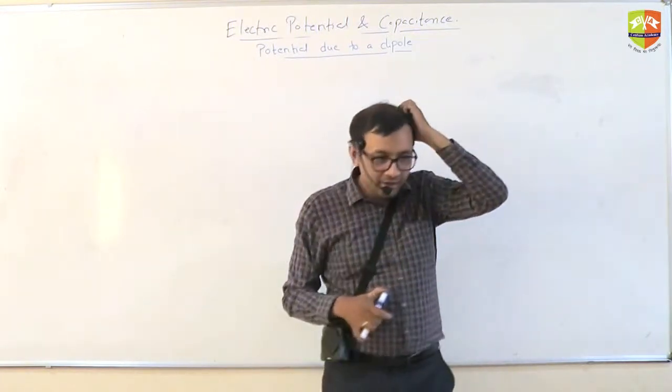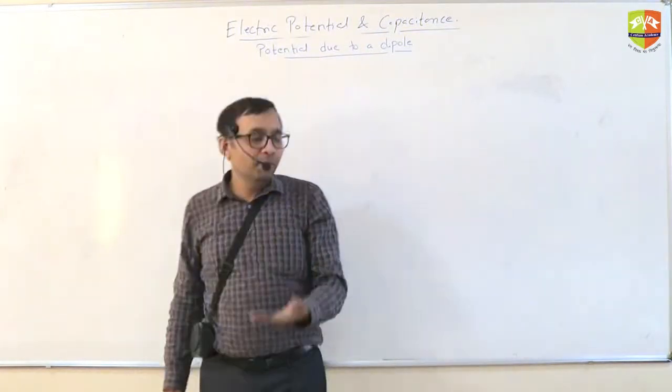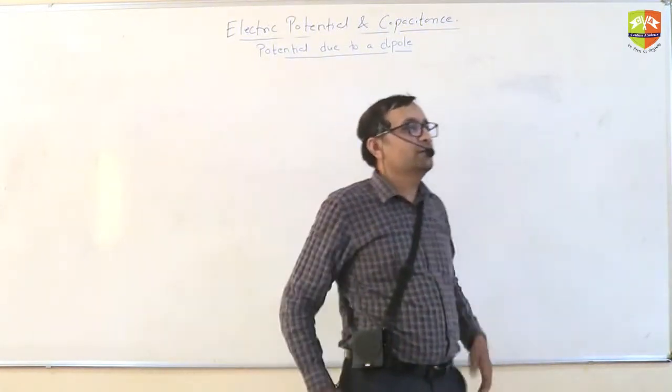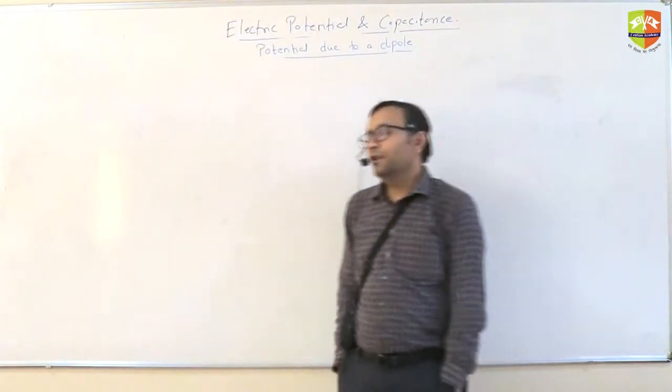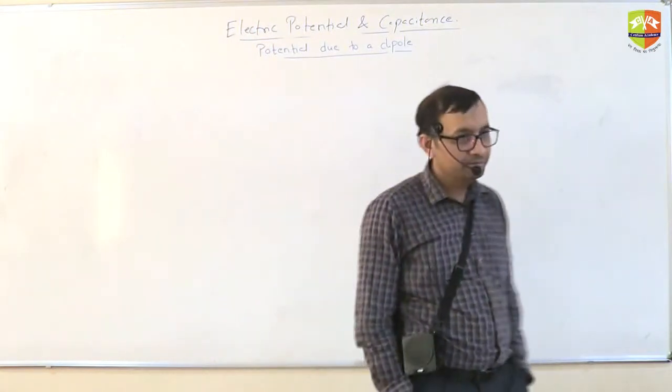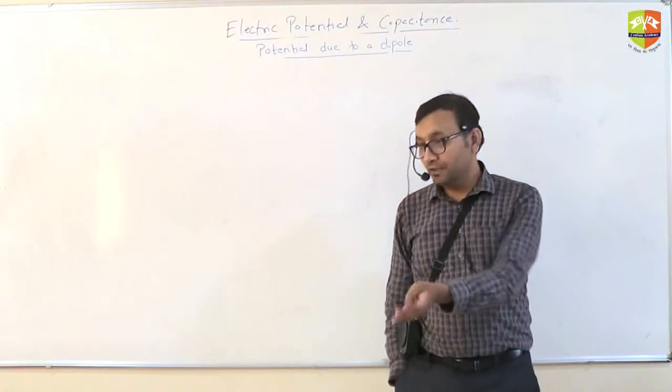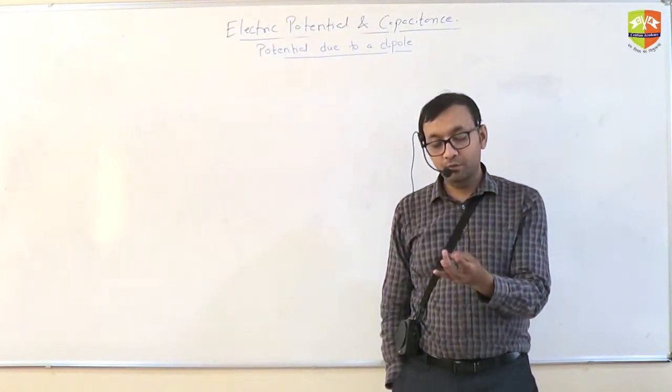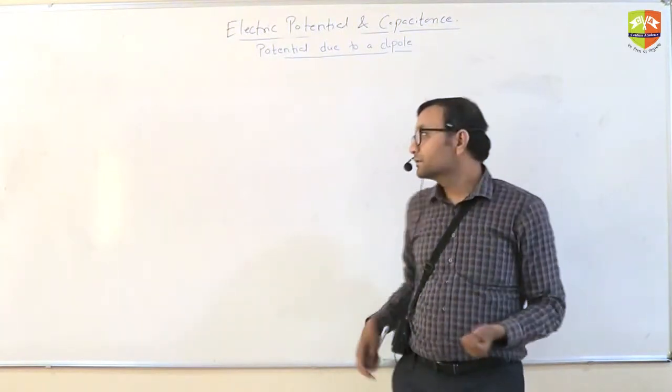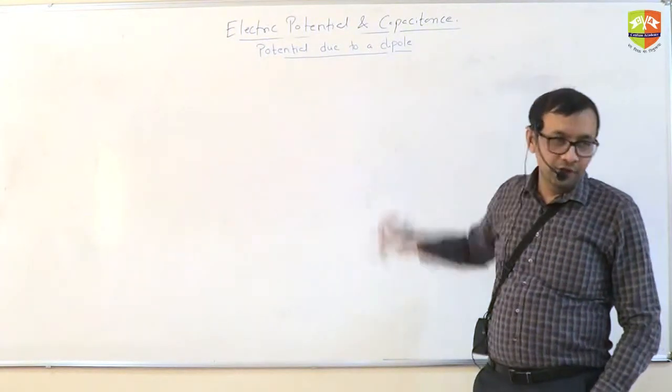And since ray optics is also not there, when ray optics was there, we were finishing the syllabus by mid of October. Now if ray optics is not there, we can finish by mid of October or maybe starting of October. This is what? April is starting. April may be doing the syllabus. 6 or 7 months. Anyways. Let's do this. Potential due to a dipole.